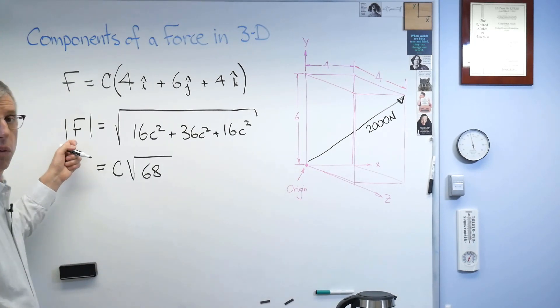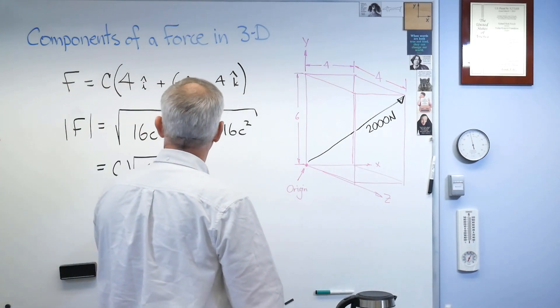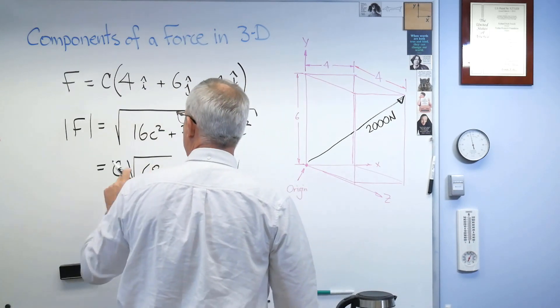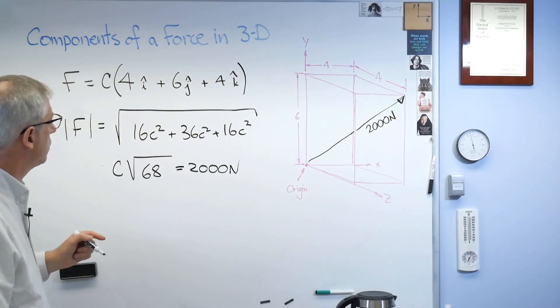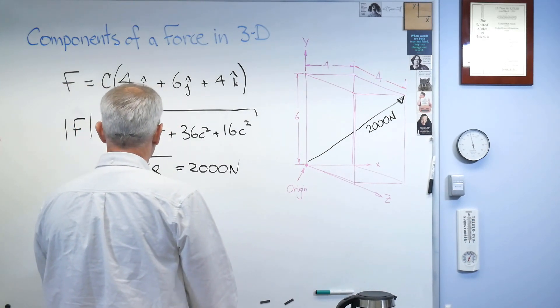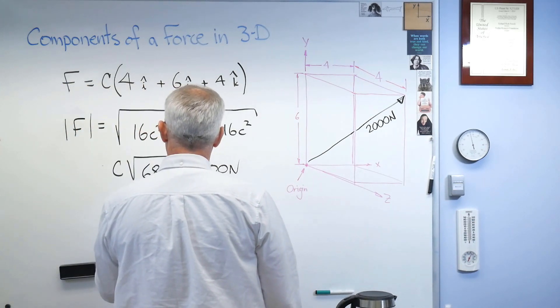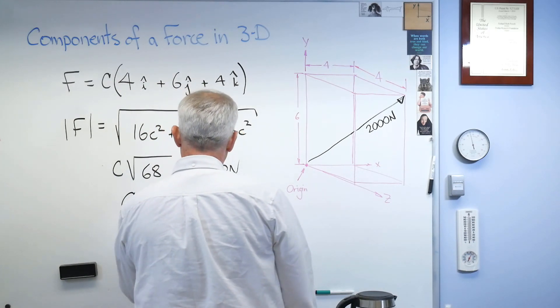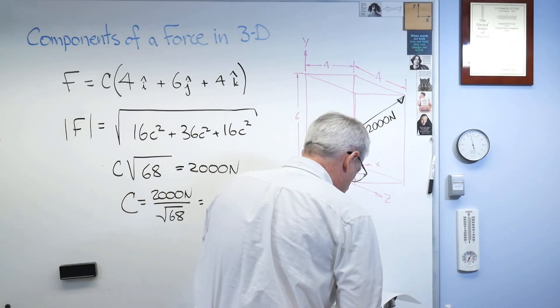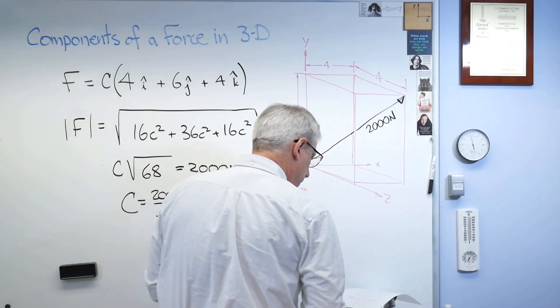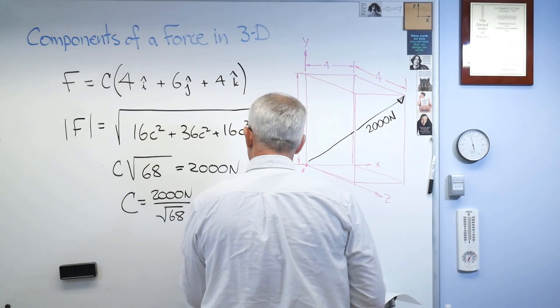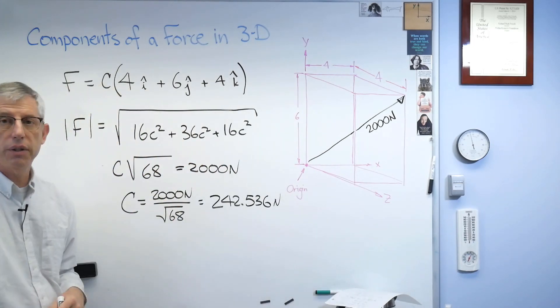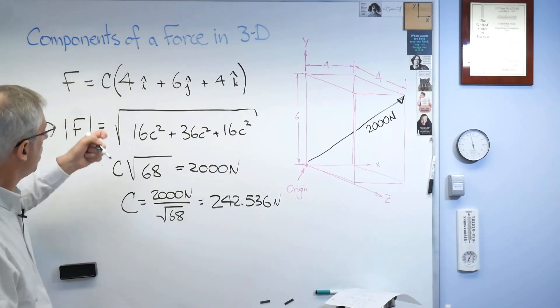Now, the magnitude here is 2,000 newtons. I know what that is. That's got to be 2,000. So let's write that here. I guess I'll leave the units on there for that. And so that means c is, let me write this down. And this is, let's see, 242.536. There. There's c. So now we know what this is.